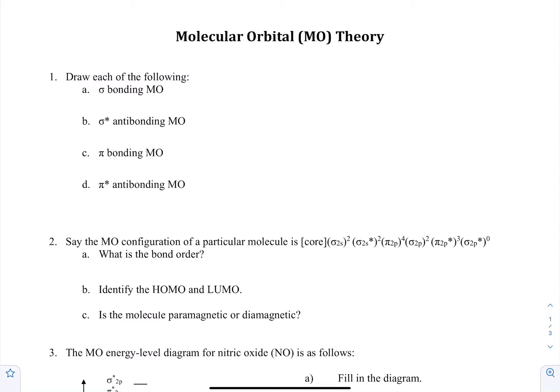Hey guys, welcome back to Cougar Chem Tutoring. I'm Austin. I'll be running through part one of problem set 16, molecular orbital theory. So in the last problem set, we learned a lot about valence bond theory, which has a lot to do with atomic orbitals. Here we're going to be talking about molecular orbitals.